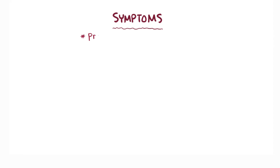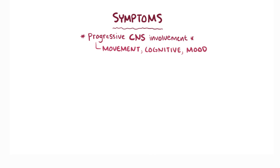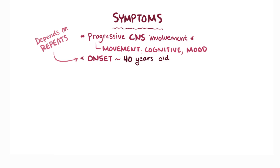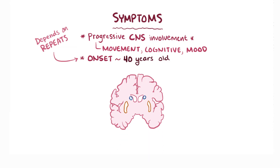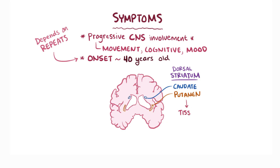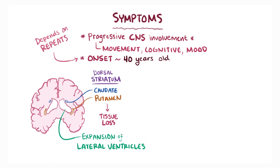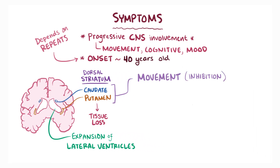The symptoms of Huntington disease involve progressive central nervous system disturbances, including movement, cognitive, and mood symptoms. The average age of onset is around 40 years old, although the age of onset depends on the number of CAG repeats. Over time, if enough of the neurons die in the caudate and putamen, which together form the dorsal striatum, it can cause actual loss of brain tissue volume in that area and expansion of the lateral ventricles.